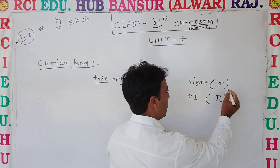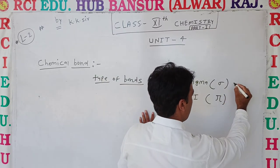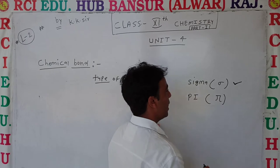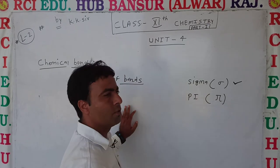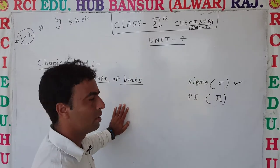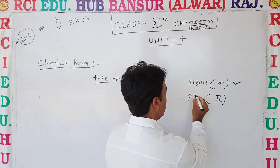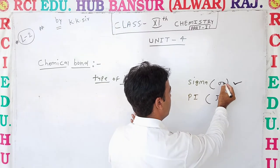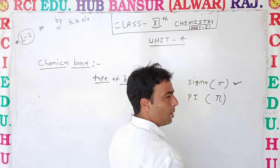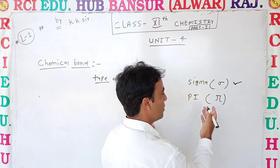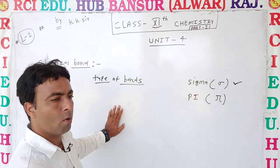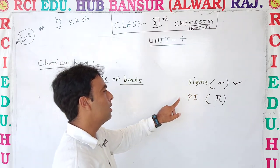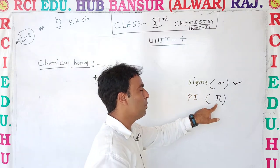The bond which is formed first between two atoms is called a sigma bond. If the atoms form a bond a second time as well, then that second bond is called a pi bond.